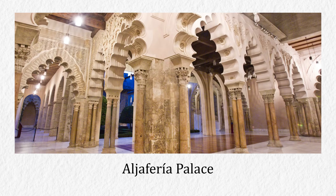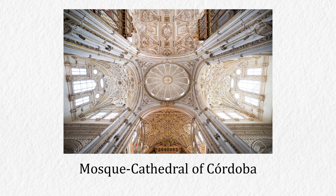For instance, Al-Jafaría Palace, built in the 10th century, had pointed arches resembling those later seen in Gothic buildings. Likewise, the earliest rib vaults were seen not in a Gothic cathedral, but at the Mosque-Cathedral of Córdoba in Al-Andalus.